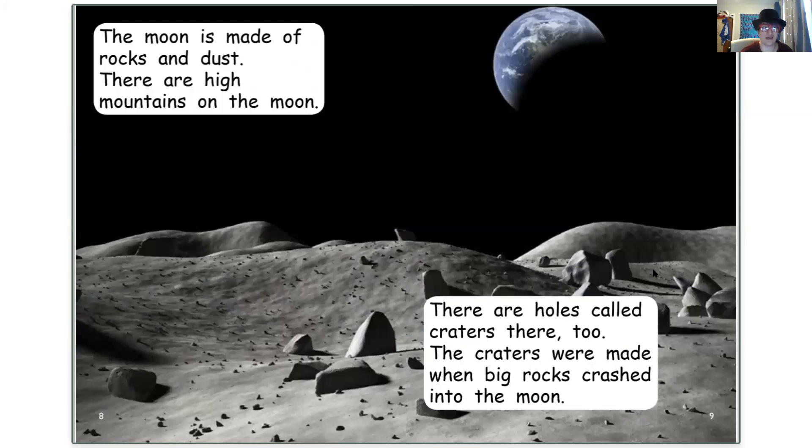The moon is made of rocks and dust. There are high mountains on the moon. There are holes called craters there too. The craters were made when big rocks crashed into the moon.